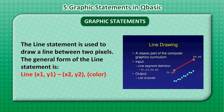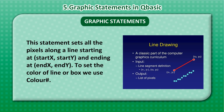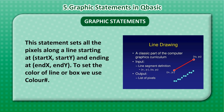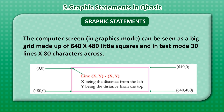Graphic Statements — The Line Statement. The Line Statement is used to draw a line between two pixels. The general form is: LINE (x1, y1) - (x2, y2), color. This statement sets all the pixels along a line starting at (start_x, start_y) and ending at (end_x, end_y). To set the color of a line or box, we use a color hash. The computer screen in graphics mode can be seen as a big grid made up of 640x480 little squares, and in text mode, 30 lines by 80 characters across.